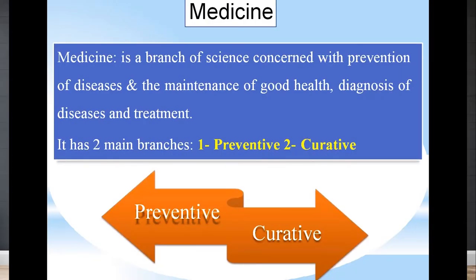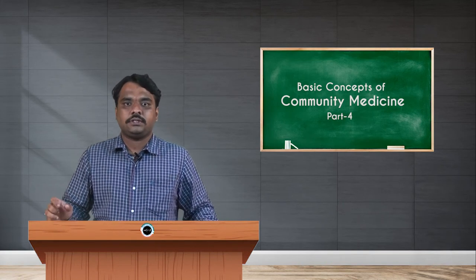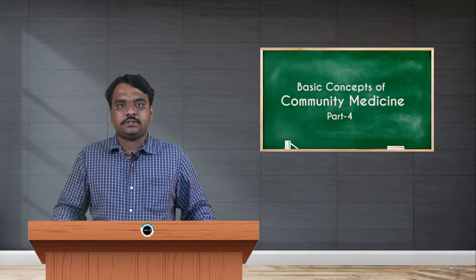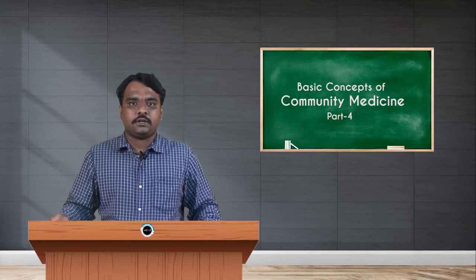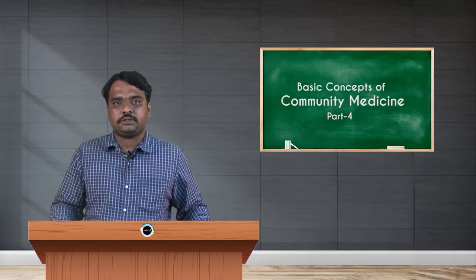Before getting into the difference between community medicine and clinical medicine, let us first see the definition of medicine. Medicine is a branch of science concerned with prevention of disease and maintenance of good health, diagnosis of disease, and treatment. There are also nutritional-related disorders — in case of diseases or deficiencies, we call them deficiency disorders.